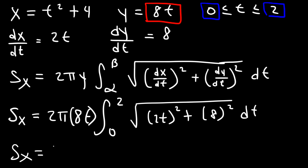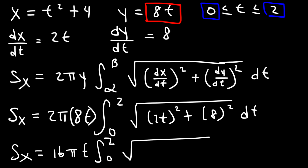So let's go ahead and simplify this expression. We're going to have 16π times t, integral from 0 to 2, square root of 4t² plus 64, dt.